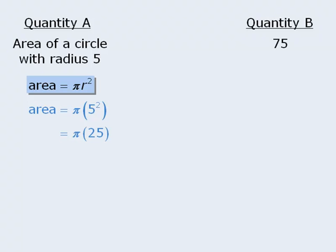Now at this point, we could replace pi with approximately 3.14, and from here we could multiply 3.14 by 25 and then compare the result with quantity B. However, this would be much more work than is necessary. Instead, I'd like to introduce you to some notation that you'll see throughout this course.